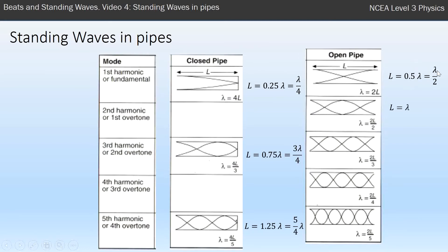You see that this one here is lambda over 2, and then lambda is double—half to 1, and the next one is 1.5 to 2.5. You see the pattern here? Half, 1, 1.5 to 2.5.